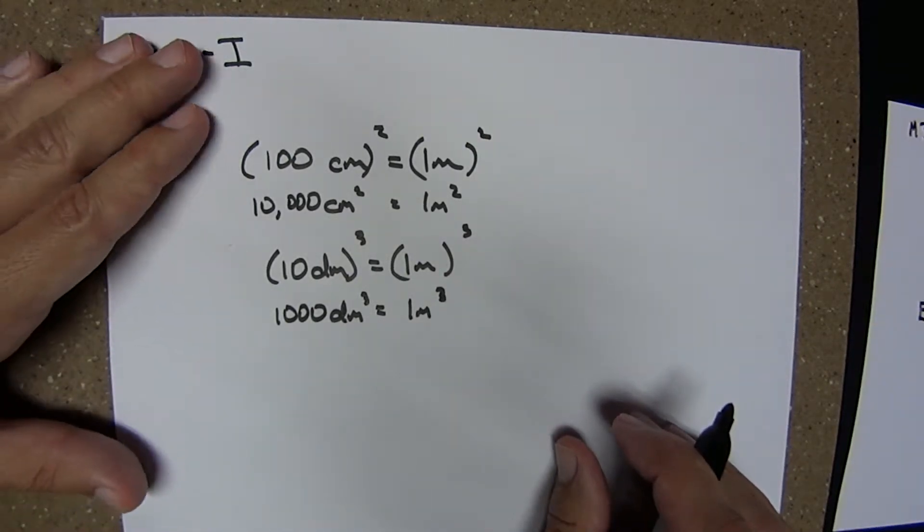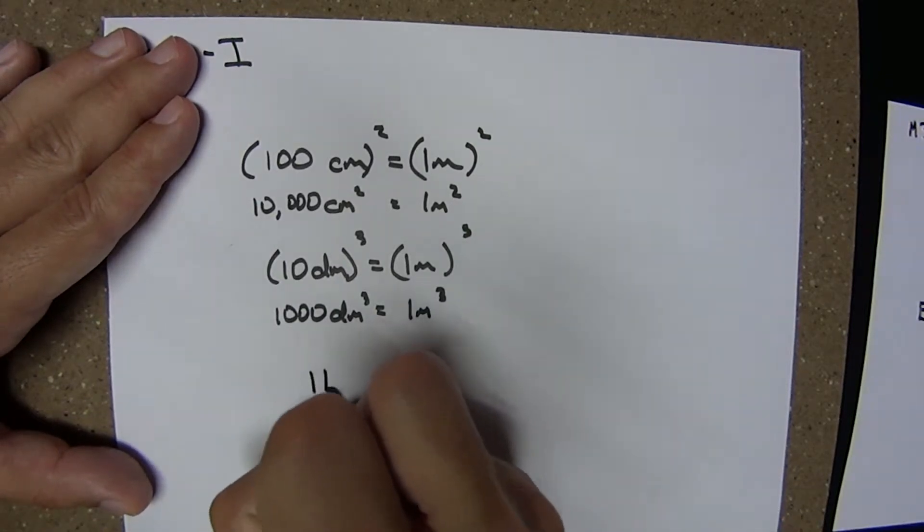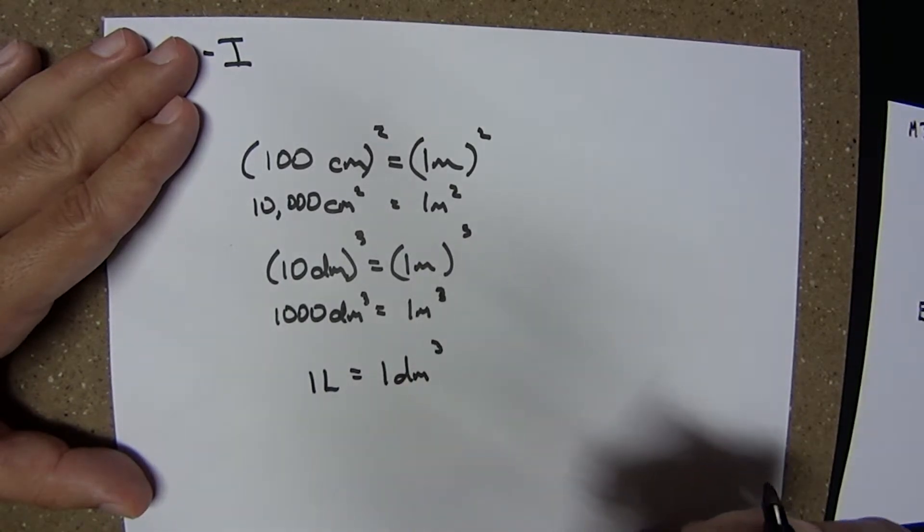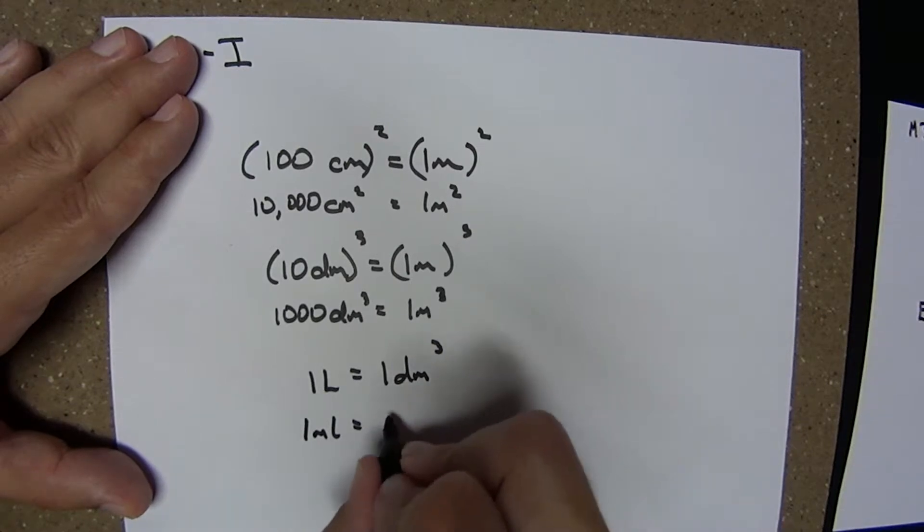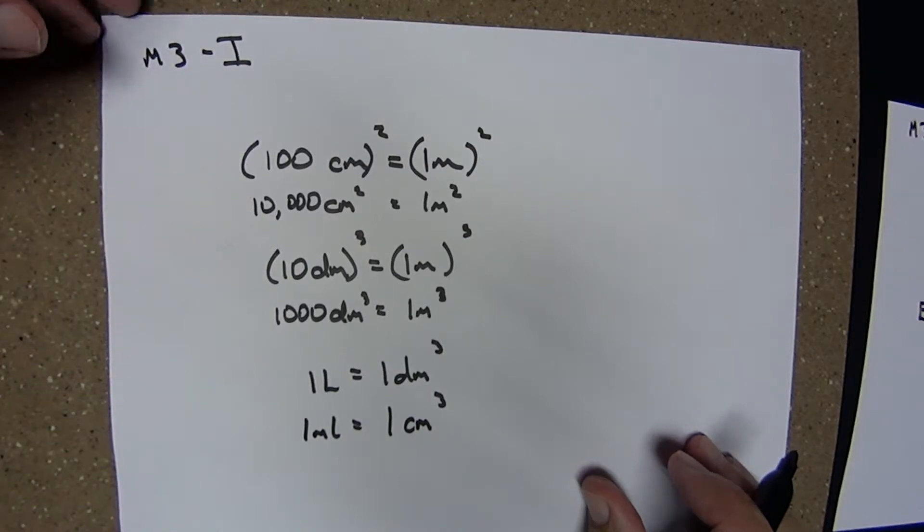Two volume equivalencies are very important and you should know these: 1 liter equals 1 cubic decimeter, and 1 milliliter equals 1 cubic centimeter. Let's practice using these SI prefixes and doing some unit conversions.